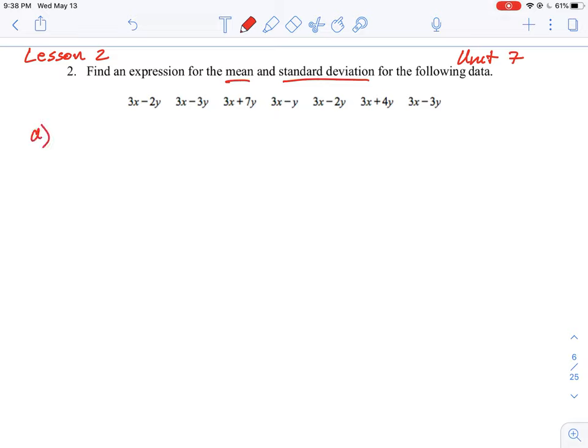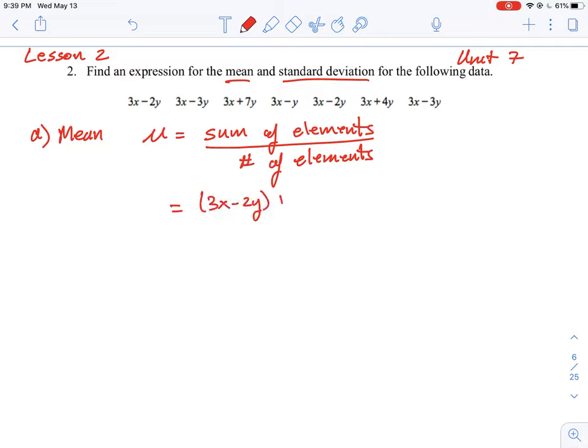The first one we're going to look at here is how do we do the mean. So we know the mean, symbol for mean is μ, and we know that it is the sum of the elements in our set divided by the number of elements. We just simply start putting them down as expressions and start adding them up.